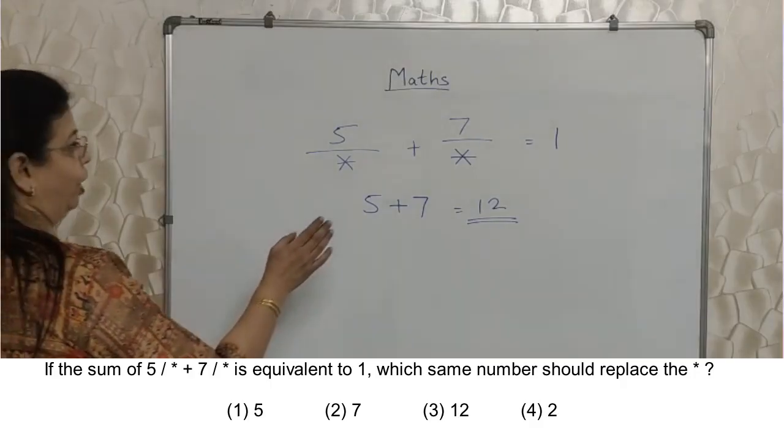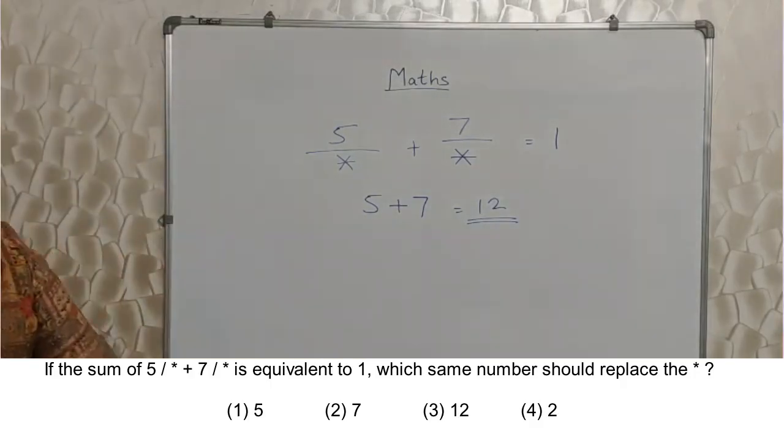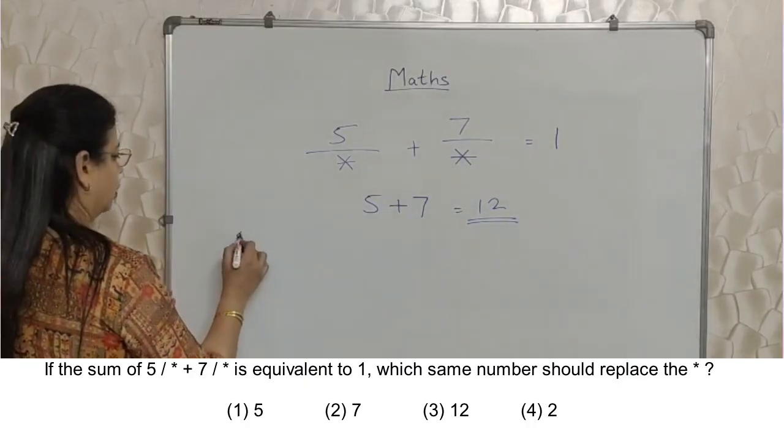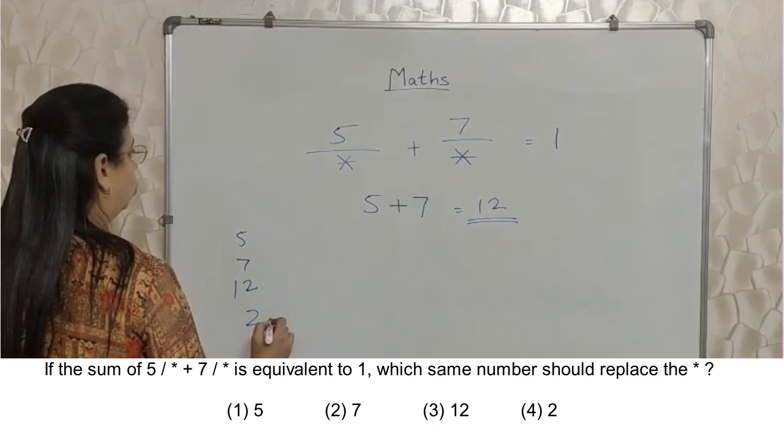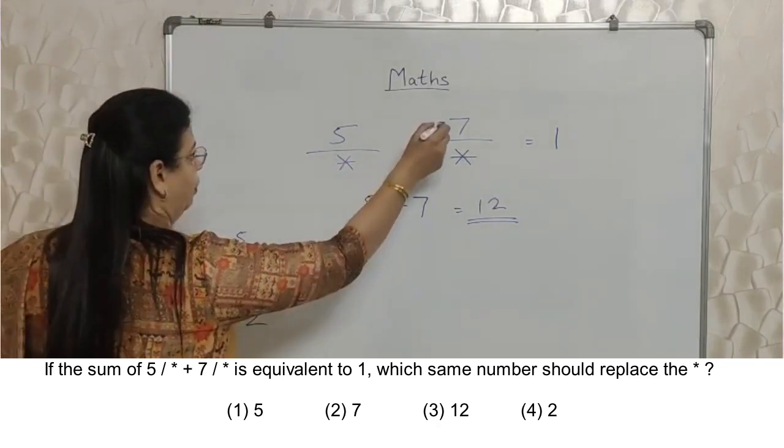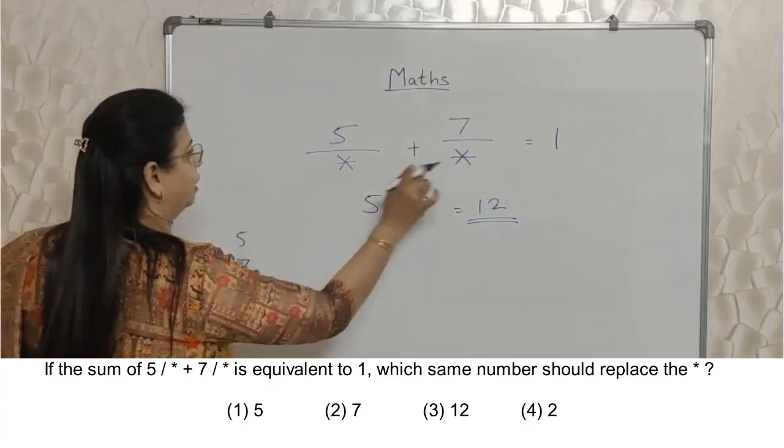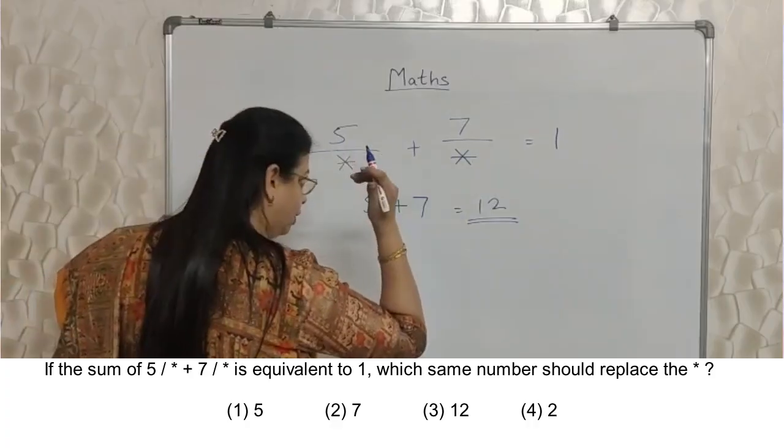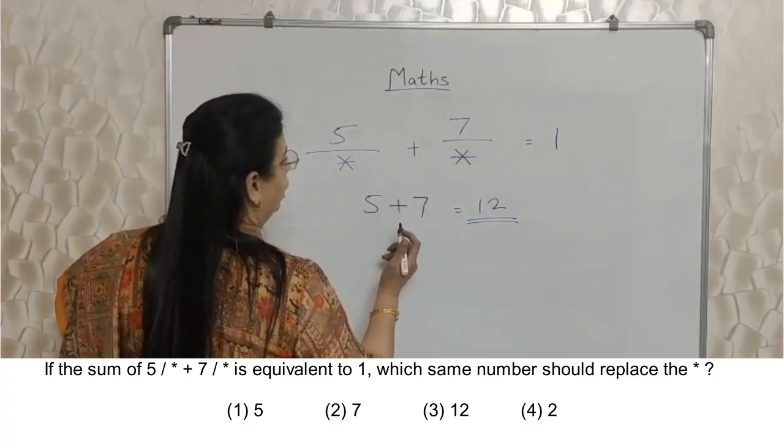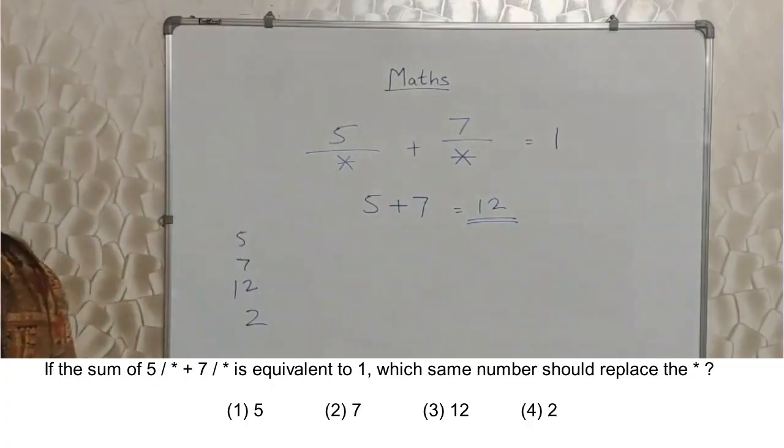But if you don't know this trick, then you will - now here they have given options: 5, 7, 12 and 2. Students do 5 upon 5 plus 7 upon 5. They see if addition is 1. If not, then they try 7. They spend lot of time. We have seen this. That's why I am telling you. I don't want you to make this mistake. This is a shortcut method. Isn't it easy?